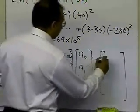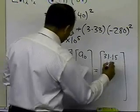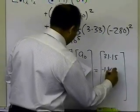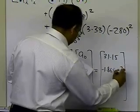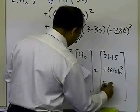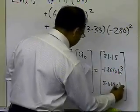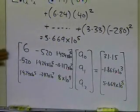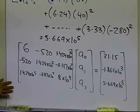The right-hand sides are 31.15, minus 1.865 times 10 to the power 3, 5.669 times 10 to the power 5. Those are the values you obtain for the right-hand side. Now all I would do is solve these three equations and three unknowns,